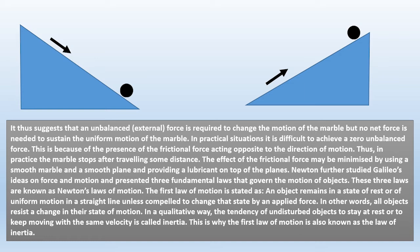Children, this part is very important. Newton expanded on Galileo's theory about force and motion, presenting three basic rules that control material motion. Newton's law of motion are made up of these three laws. The first law of motion is expressed as follows: An object remains in a state of rest or of uniform motion in a straight line, unless compelled to change that state by an applied force. In other words, all objects resist a change in their state of motion. In a qualitative way, the tendency of undisturbed objects to stay at rest or to keep moving with the same velocity is called inertia. That is why the first law of motion is also known as the law of inertia.